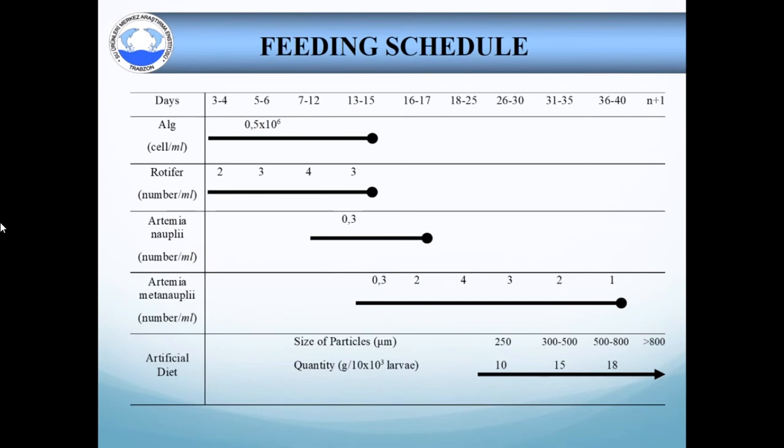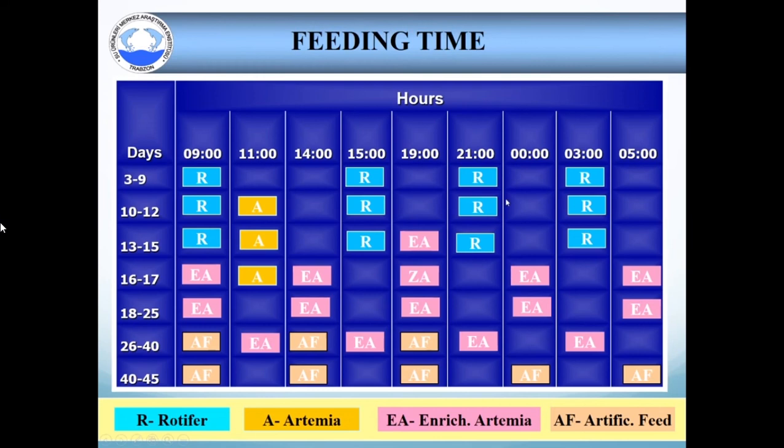On day 10 to day 17, newly hatched nauplii of artemia are given to the larva, and from day 13 to day 40, enriched artemia are given. The density of artemia increases from 0.3 to 4 individuals per milliliter. Macro diet can be fed to the larva on day 26. This is a basic feeding schedule that we apply in our facility. This is feeding timetable. The days and hours we give the food like this table.